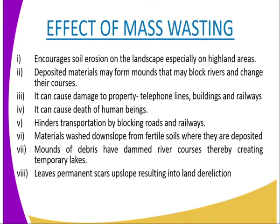Number five, it hinders transportation by blocking roads. Number six, materials washed down from fertile soils make a good agricultural site where they have been deposited. Number seven, mounds of debris have dammed river courses, thereby creating temporary lakes. Number eight, it leaves a permanent scarp, resulting in land dereliction. Those are the effects of mass wasting.